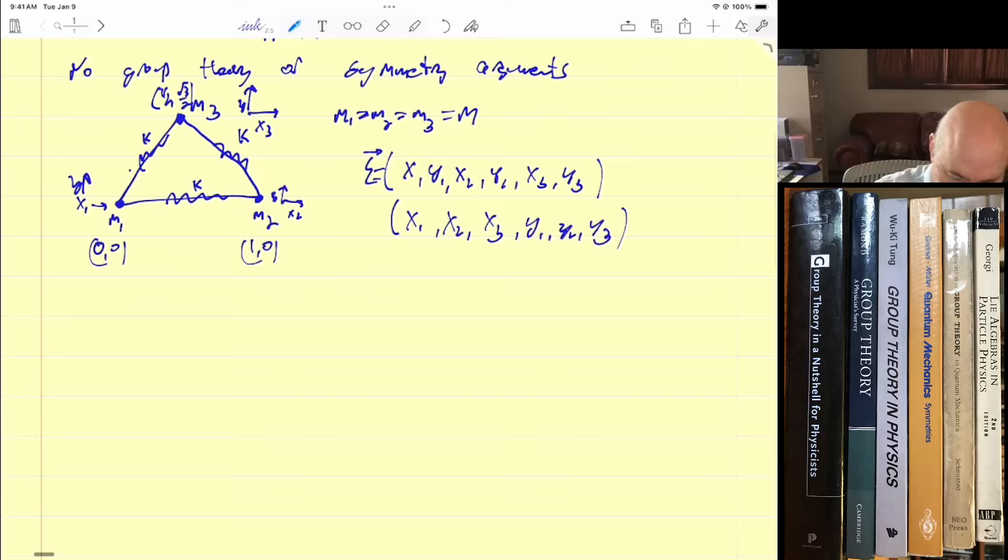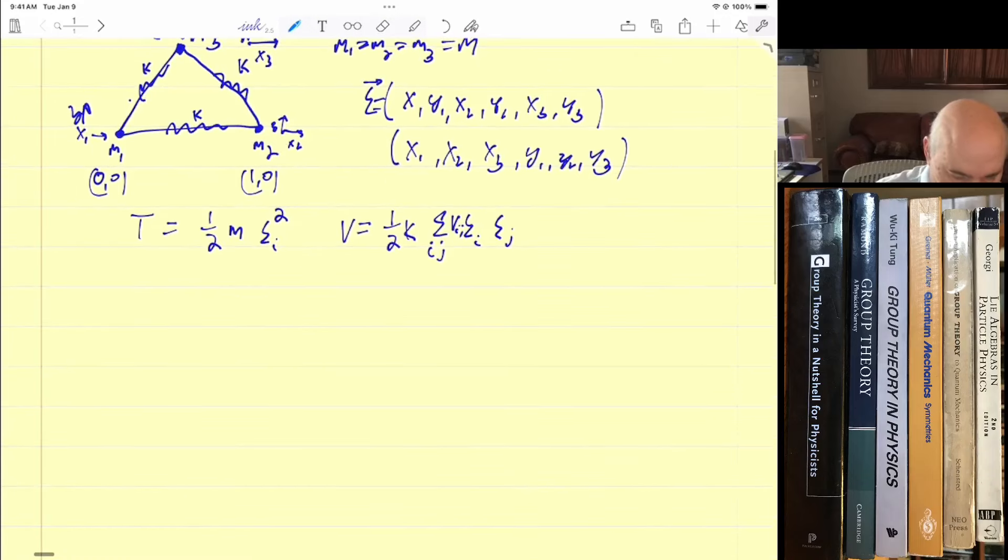So the kinetic energy is going to be equal to 1 half M each mass chi_i squared. And the potential energy is going to be equal to 1 half k x squared. But it's going to be a quadratic form. Sum over ij, chi_i, chi_j, with a coefficient here, v_ij. So this is the most general kind of potential energy, which is quadratic. At equilibrium there are no linear terms because we're at equilibrium. We don't need the constant terms.